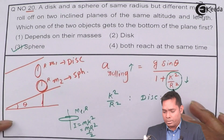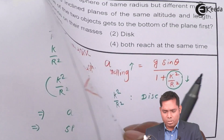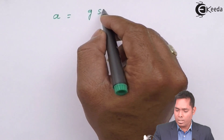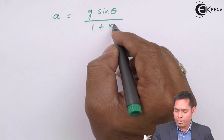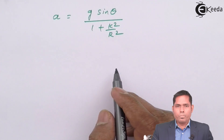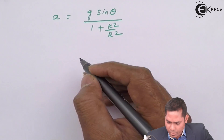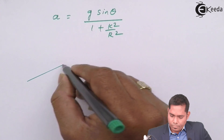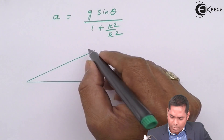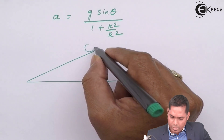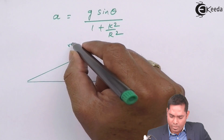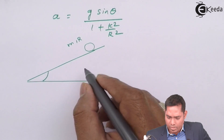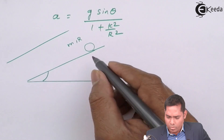Now let us derive the expression a = g sinθ / (1 + k²/r²) that we used. We can use conservation of energy. Consider a sphere or any object of mass m and radius r placed on an inclined plane, which it rolls down.